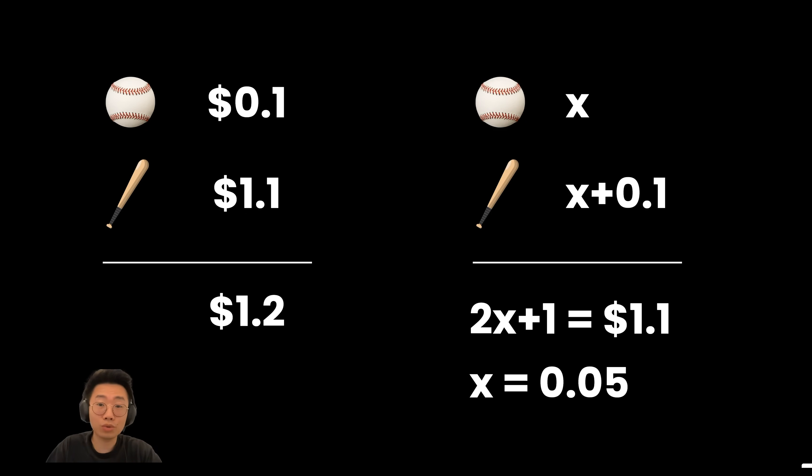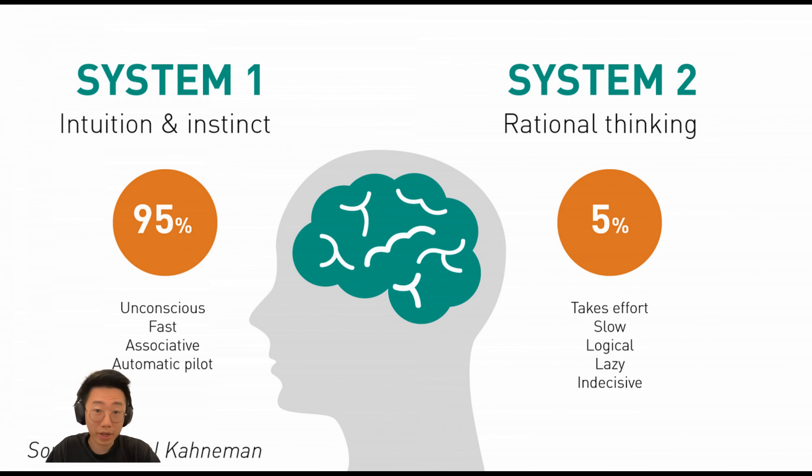Instead, you actually need to do some calculation and realize the real answer is $0.05. But they all got the answer wrong at the beginning because they all thought that this is a simple question and just gave it an automatic intuitive answer.